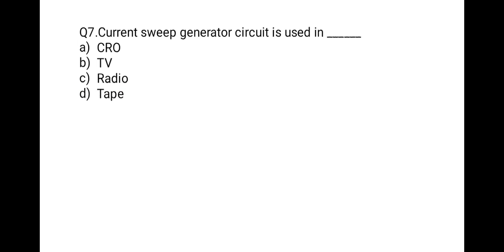The next question: current sweep generator circuit is used in which of the following? Options: CRO, TV, radio, or tape. A linear time-based current waveform is required in the deflection of a TV receiver, so the current sweep generator circuit is used in TV. The correct option is B: TV.